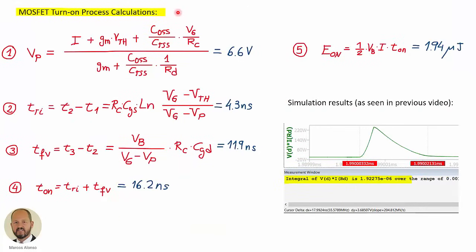For the turn-on process calculations, we apply the equations we have. We calculate the Miller plateau voltage using this expression and get 6.6 volts, which is very similar to the simulation value. Then we calculate the current rise time using this equation and get 4.3 nanoseconds. The voltage fall time using this equation gives 11.9 nanoseconds, so the total on-time is 16.2 nanoseconds. Using the energy equation we get 1.94 microjoules for the turn-on losses, and from the simulation we get 1.92 microjoules — very similar.